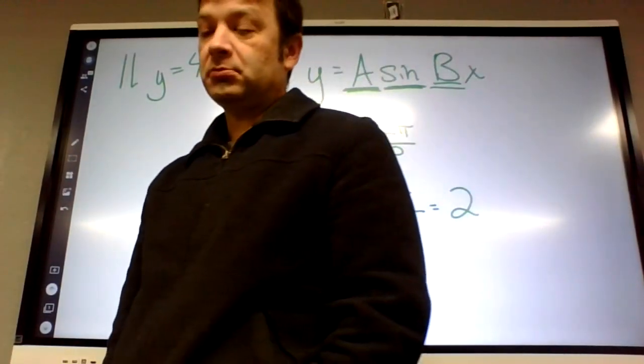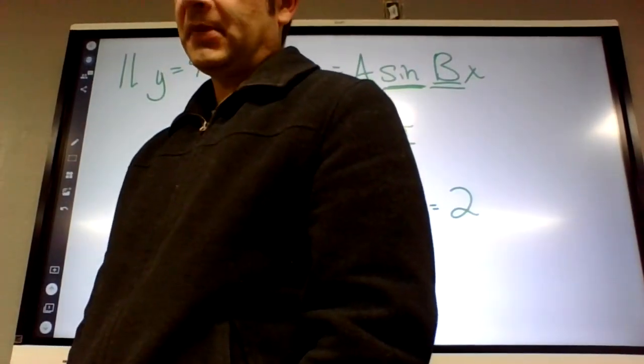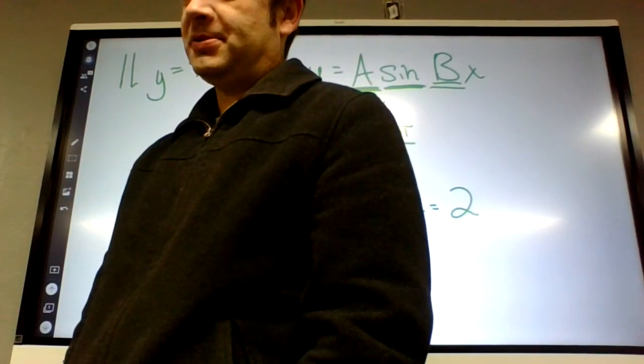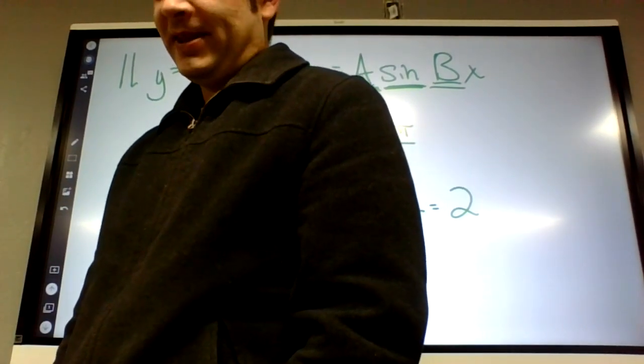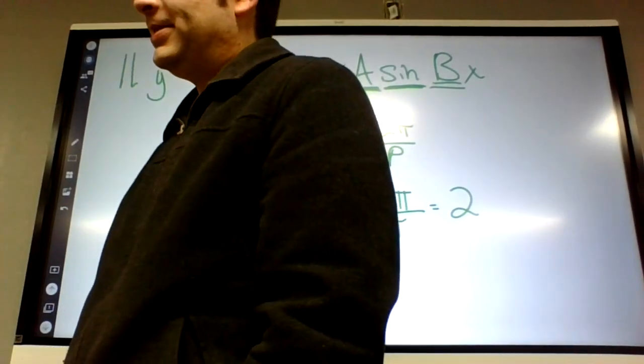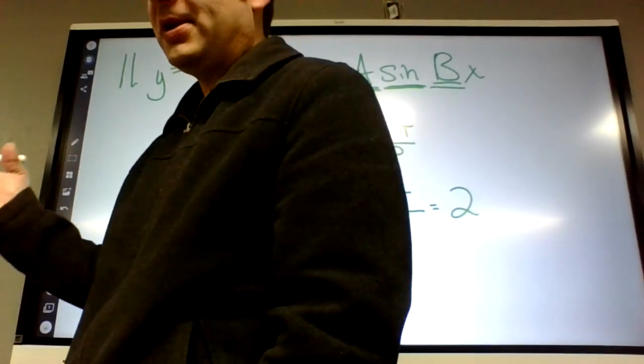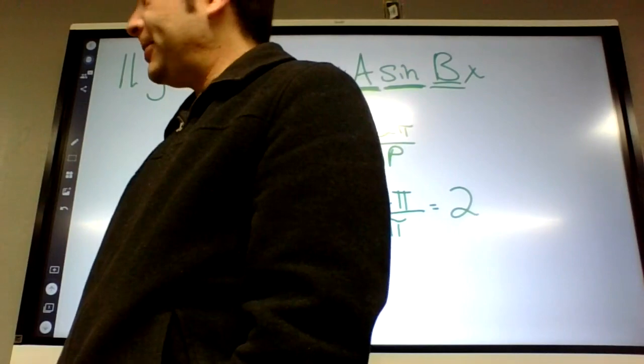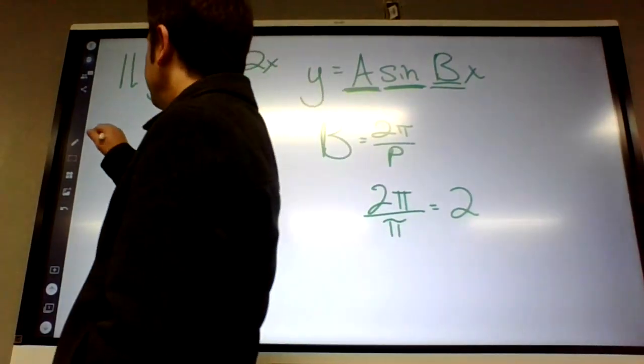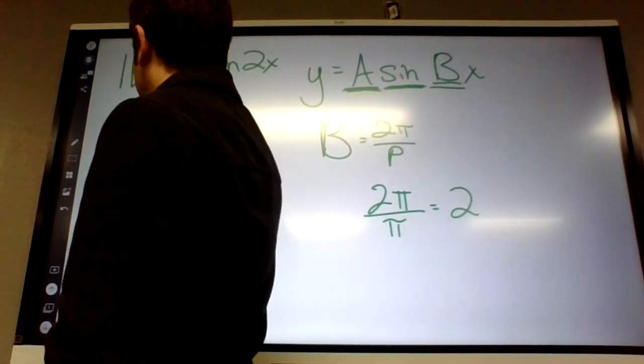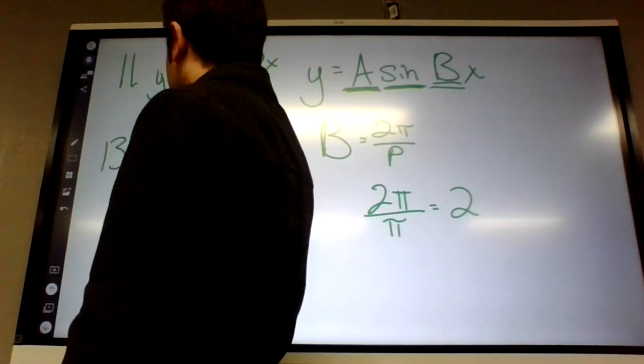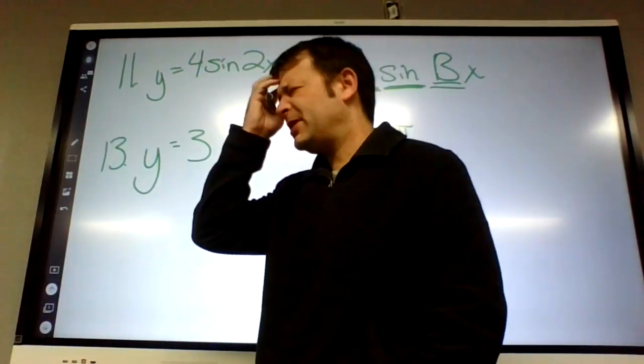To the record here, started obviously 13. What's the amplitude? Three. It's going up to three and negative three. The amplitude you could also think of it, on the next assignment we kind of have to, as the height divided by two. So it's going from negative three to positive three.